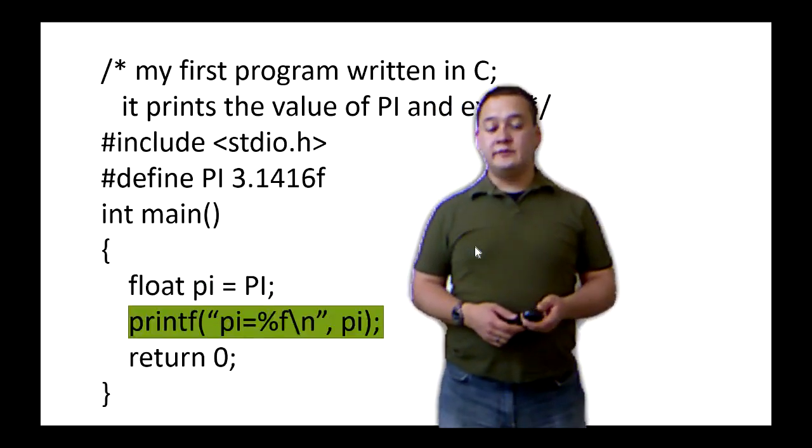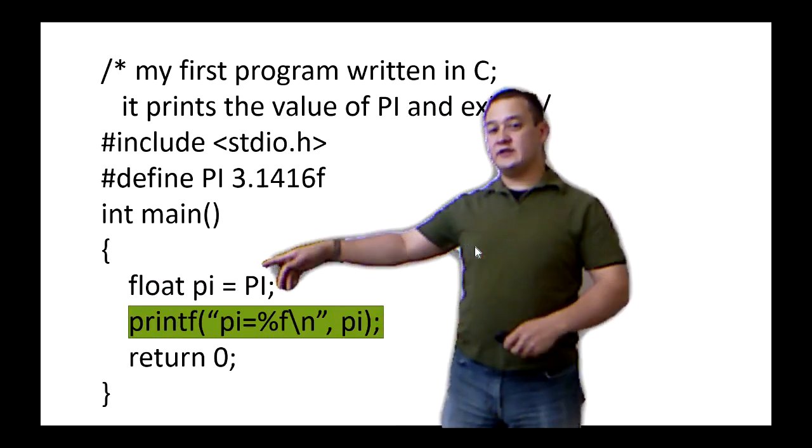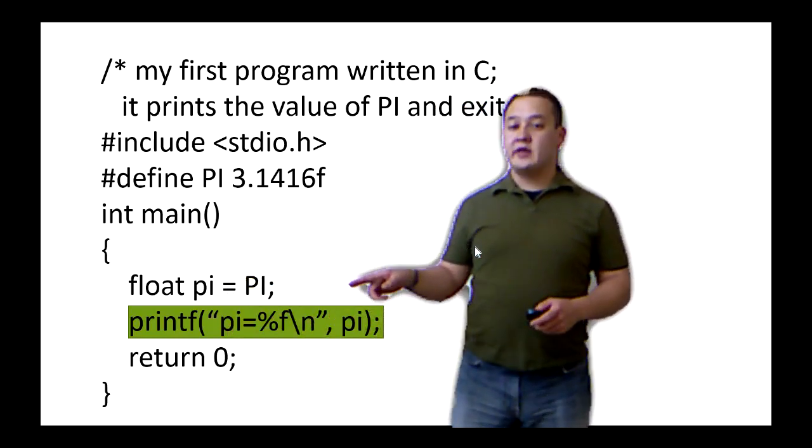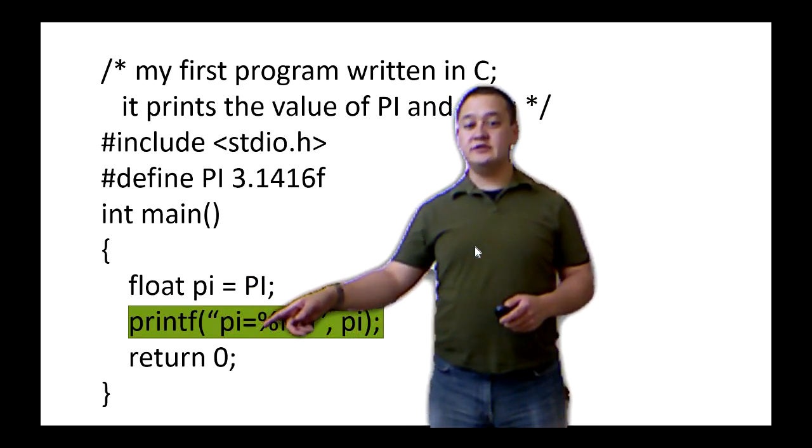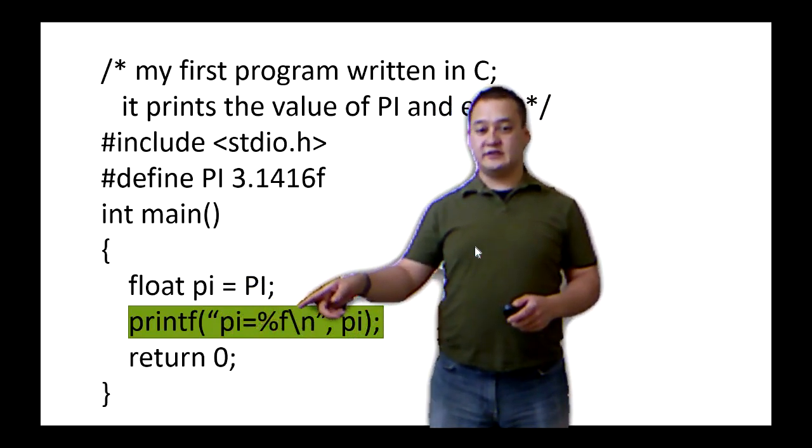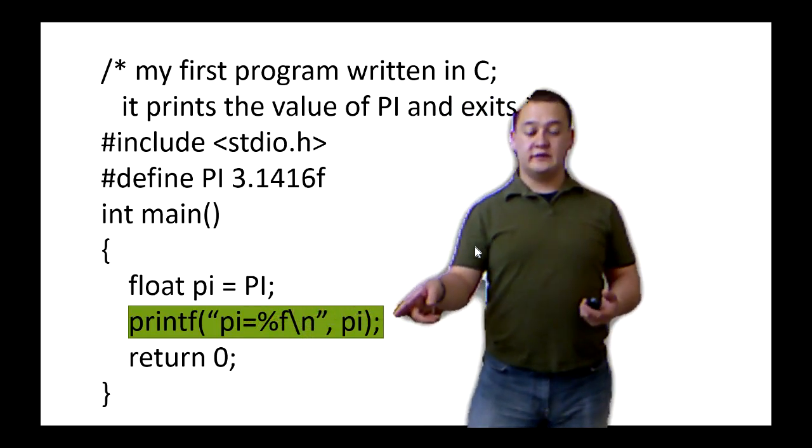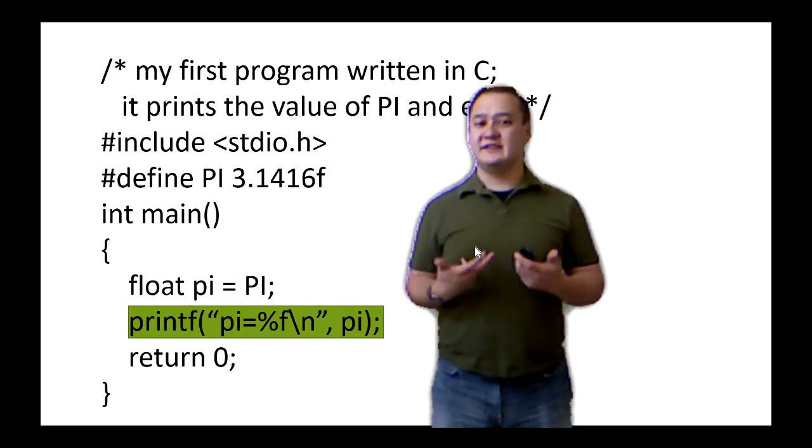The final main thing that I want to talk about here is this function printf. So you see the printf, it's got this parentheses, this is the function. And what it's going to do is it's going to print the string pi equals, and then it's going to take this, telling us, hey, I'm looking for a floating point number, looking for the floating point number pi. It's going to print that 3.1416f onto the screen.